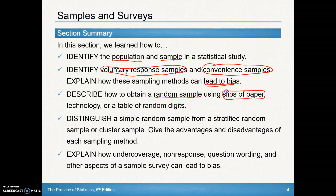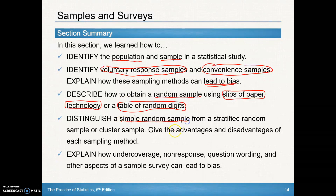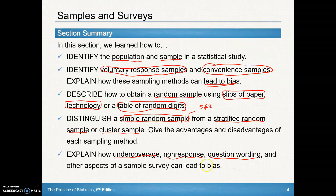Ways to obtain a random sample include slips of paper in a hat, technology such as the randint menu on your calculator, or the table of random digits, which is table D. You should be able to distinguish a simple random sample — our SRS — from a stratified random sample or a cluster sample. Then explain some of the errors we just talked about: undercoverage, non-response, and question wording, because each of those can lead to response bias.